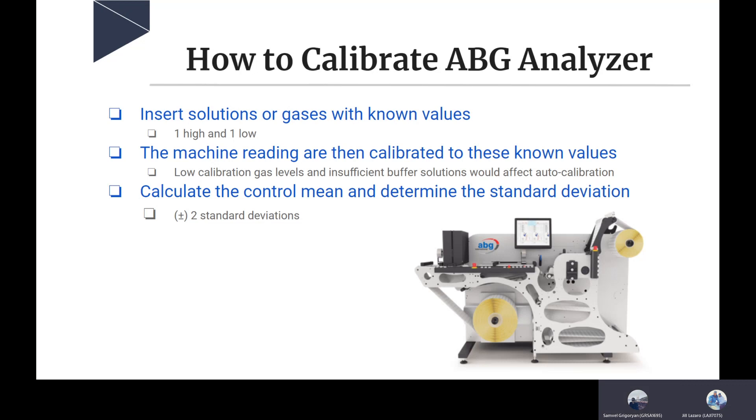What we're really looking for is that our calibrations are within two standard deviations. When we calibrate them, we want to make sure that our control mean is determined properly and that we are within the measurements that are allowed for our machine to be working properly.